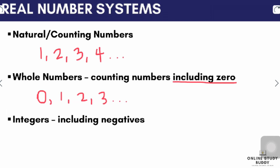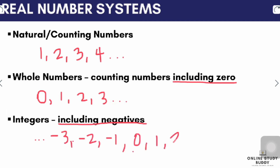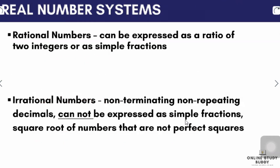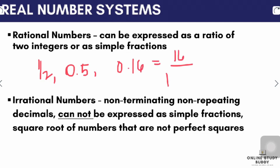Next are integers. For integers, we include the negative numbers — we add the negative counterpart of counting numbers. So for example, we have negative 3, negative 2, negative 1, 0, 1, 2, and 3. Next, we have rational numbers. Rational numbers are numbers that can be expressed as a ratio of two integers or as simple fractions. Examples include 1/2 or 0.5, and 0.16 — since 0.16 can be written as 16 over 100, it is a rational number. Anything that can be written as a fraction is a rational number.